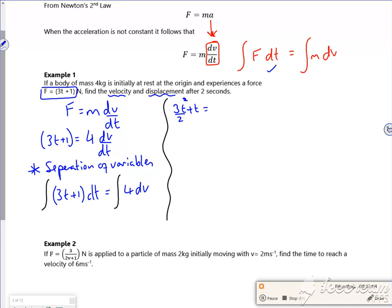Now let's have a look. So initially it's at rest, so when t is 0, v is 0. And if you sub that into that equation, that'll give you c is 0.